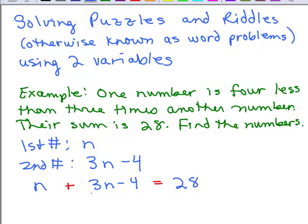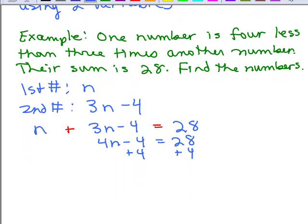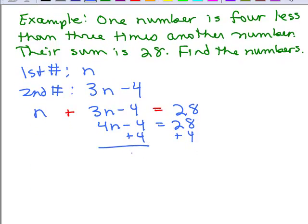And then we can solve this fairly easily. That's going to be 4n minus 4 equals 28. Add 4 to both sides to get 4n equals 32. Divide both sides by 4, and n is 8.